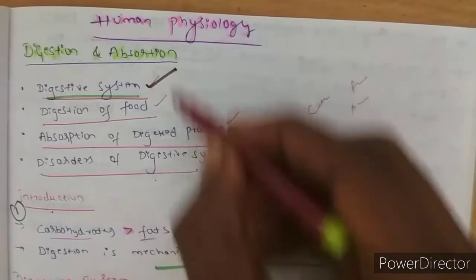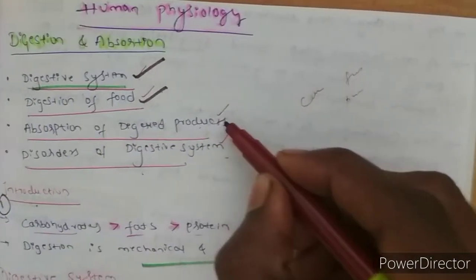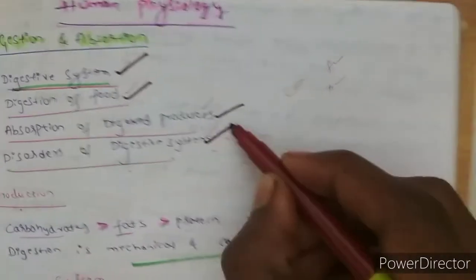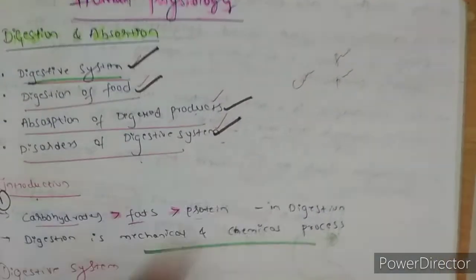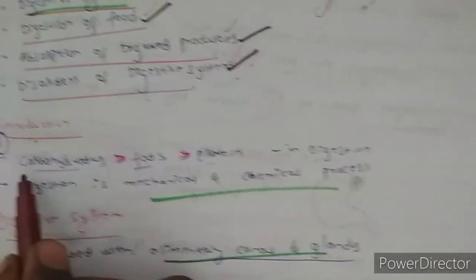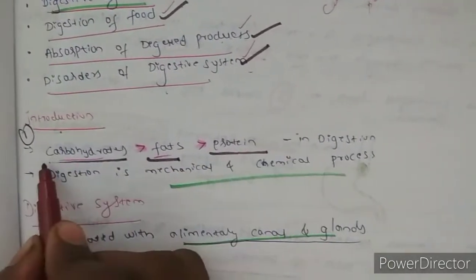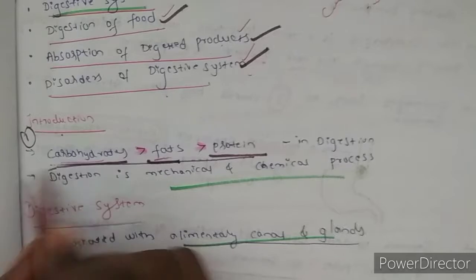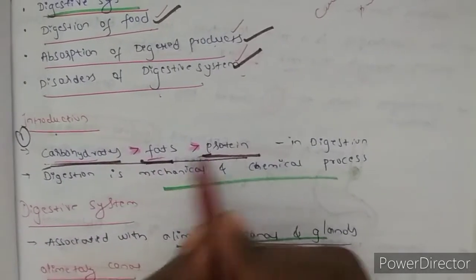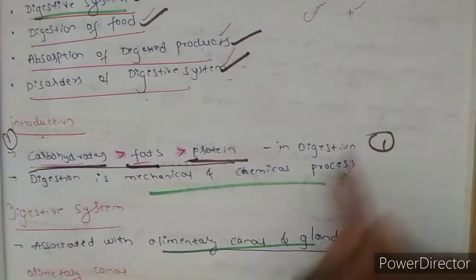First of all, in this chapter you will have four different topics: digestive system, digestion of food, absorption of digested products, and disorders of digestive system. So first, introduction - you have to remember this: carbohydrates will digest first, next fats, next proteins. You can remember through alphabetical order: C will come first, F, and P. One point trick.